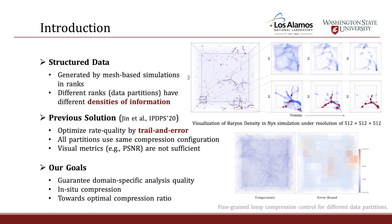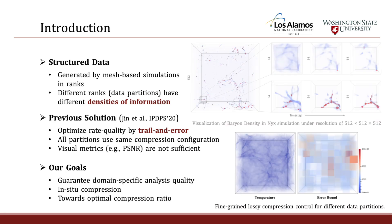Based on our previous solution, we found that visual metrics such as PSNR are not sufficient to represent the real post-hoc analysis quality. For example, in some cases PSNR can be low but the post-analysis quality for Halo Finder can be quite good. Our goal in this work is to first guarantee domain-specific analysis quality, then perform in-situ compression using different configurations for different partitions, and achieve optimal compression ratio for given datasets.